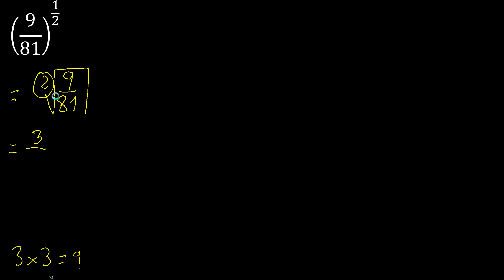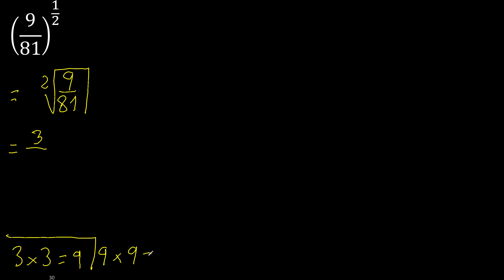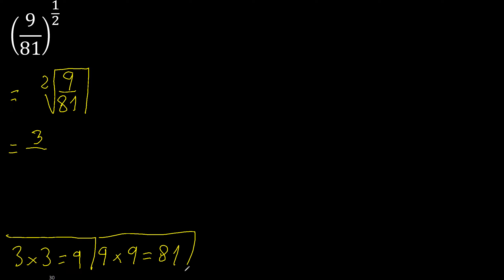Now find numbers that multiply to give 81. Since 9 multiplied by 9 is 81, the square root of 81 equals 9. We now have equal-base numbers.